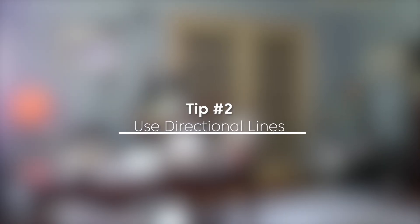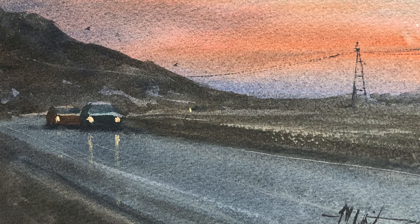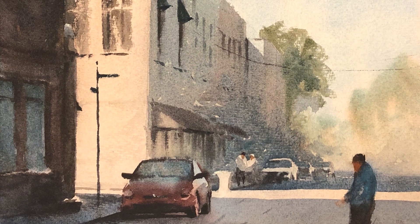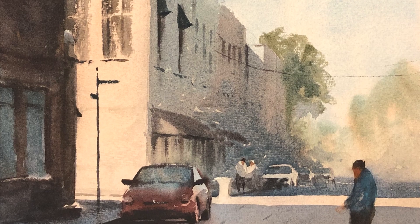Tip number two: use directional lines in your painting. These are also great lead-ins for the viewer. If I have a road leading into the scene and the wash is still a little damp, I can take my palette knife and scrape in some precise directional lines to guide the viewer into the scene. You can do the same with power lines, and even use texture to move the viewer's eye and create connectivity between your foreground, middle ground, and background.